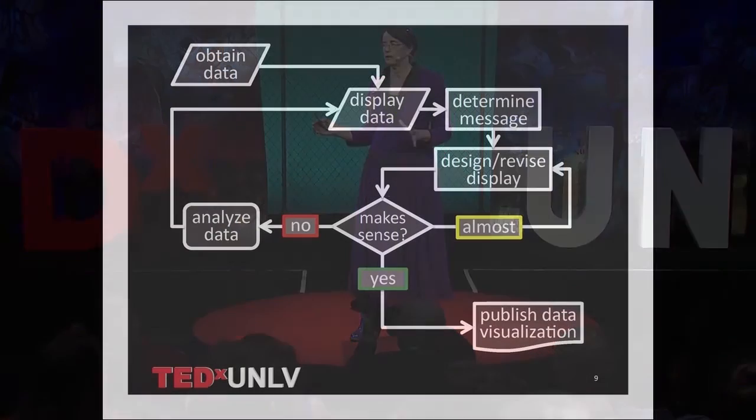You start out with your raw numbers, and it can come in many forms. You've scraped the internet, you've done surveys, you've done research — whatever. You've gathered your raw data. And the first thing you have to do is look at it and say, 'What is it saying?' Sometimes you already know, you have a pretty good idea. And in other cases, you have to look at it six ways from Sunday to figure out what it's trying to say. This is where you get intimate with your data.